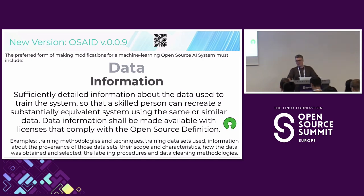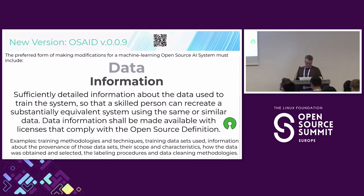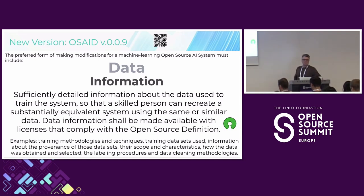That's why there are no strict requirements on the original dataset in the definition — the original dataset is not part of the preferred form of making modifications. Once training happens, the knowledge of the dataset gets transferred into the trained weights and parameters. Modifications after that happen downstream with different tools and techniques — fine tuning, RAG, and other things. They don't retrain from scratch, because it's also technically not feasible to rebuild the same exact trained weights from the same dataset.